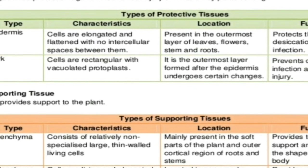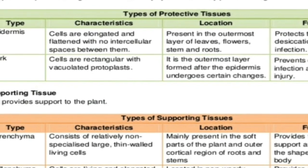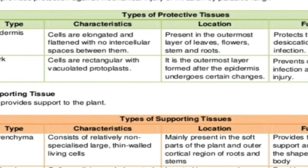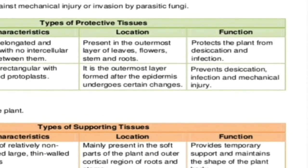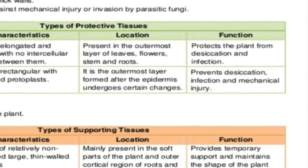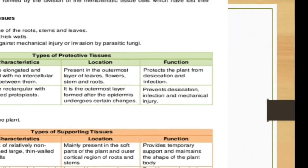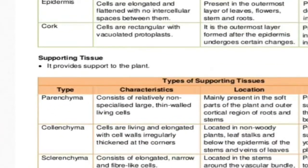Cork cells are dead cells. The bark or outer covering of a tree is what we call cork. These are rectangular cells that form a vacuolated outermost layer, present outside the epidermis. Cork also protects against desiccation, infection, and mechanical injury. So both epidermis and cork are protective in nature.